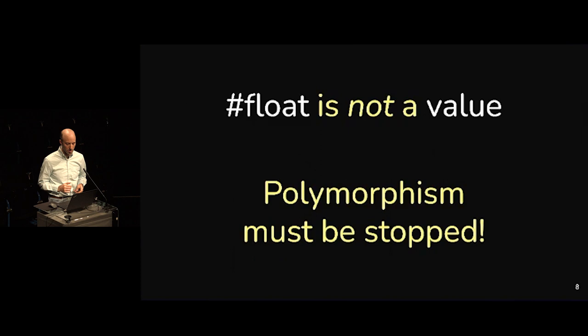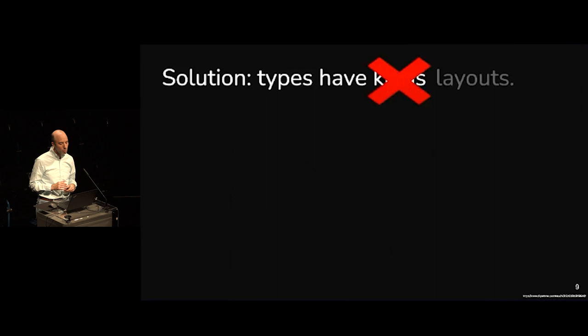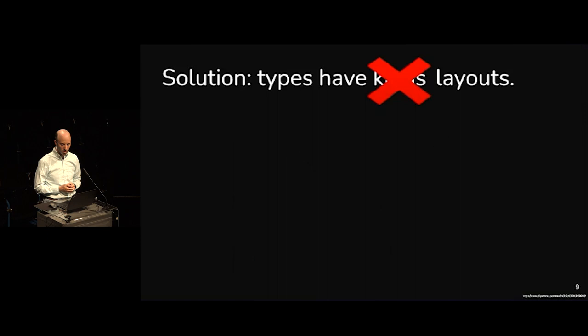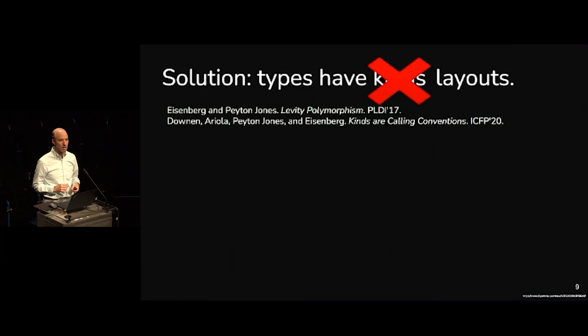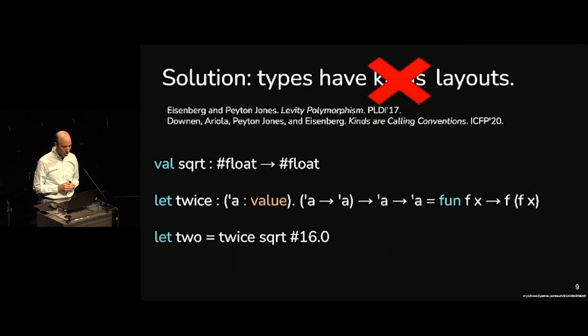The way we're going to stop that is by assigning types kinds — except kinds are over-general; we don't really need a full kind system. Instead, types will have layouts. This is a subspace of kinds that classifies the types we have in OCaml. This is not a fresh idea — it's based on previous work I've done with collaborators, and there's other work out there in this space too.